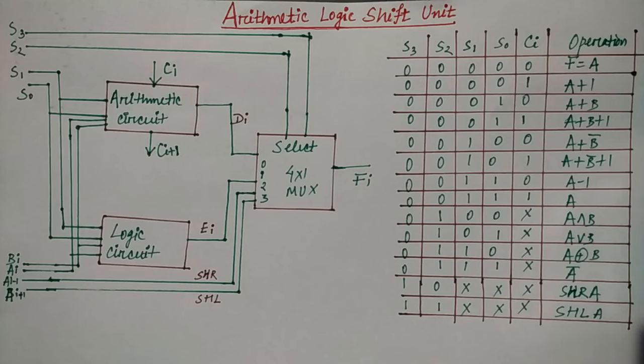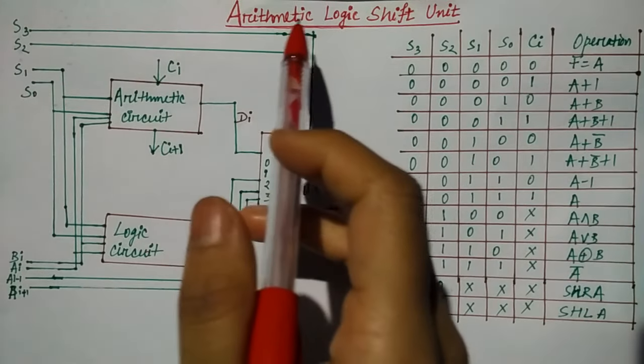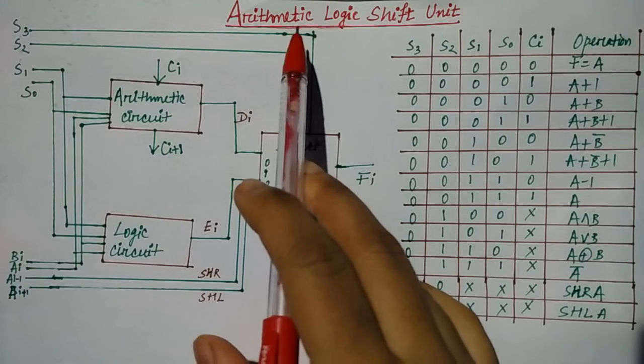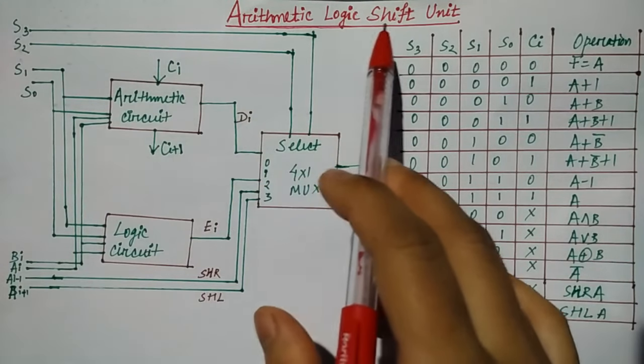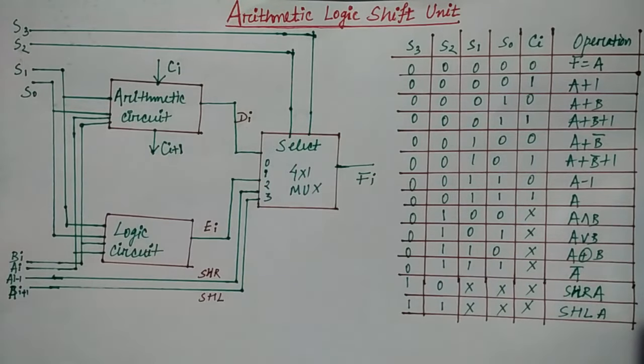What happens in the Arithmetic Logic Shift Unit? There are three different things combined. One is arithmetic, the other is logic, and the other is shift. For three, there are different selection lines and different circuits.